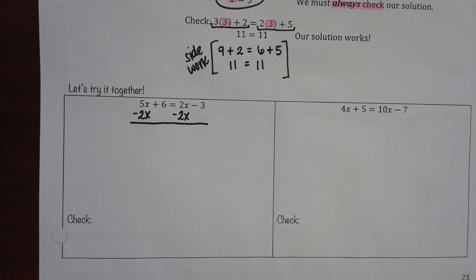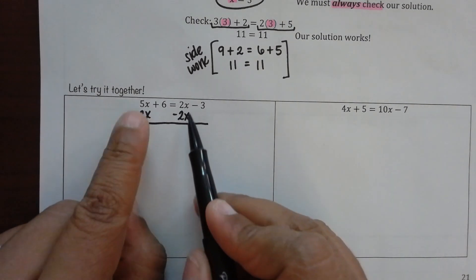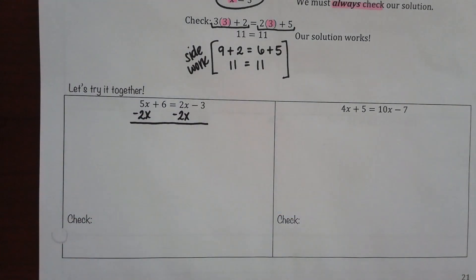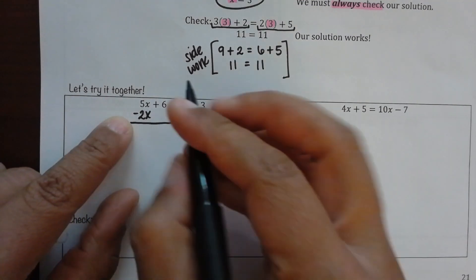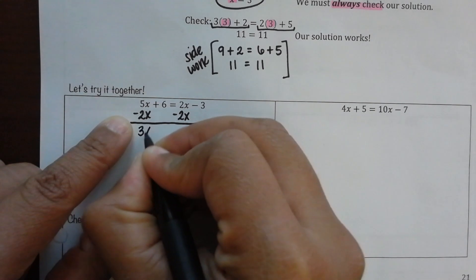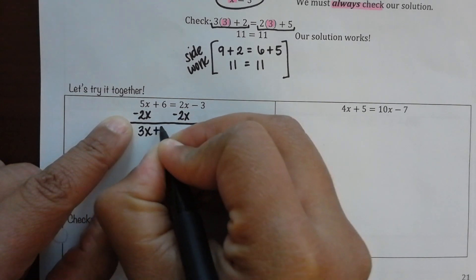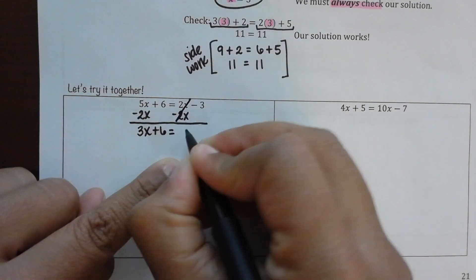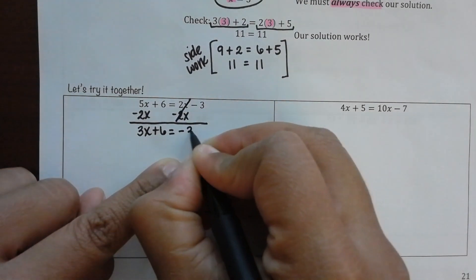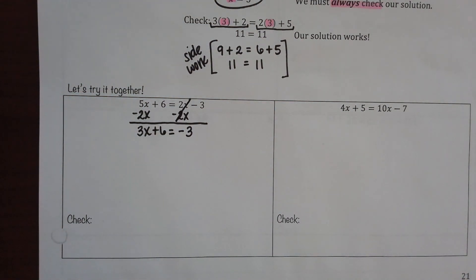Make sure you write what's being subtracted underneath it. You see how I lined up my x terms? That's how you keep your work nice, neat, clean, and concise. It's not about being perfect, it's about being legible. If you can't read it, you don't know how to study it. So, 5 minus 2 gets you 3x. Plus 6. Equals. What happens to those twos? Negative 3, right? Because there's a negative sign in the front, you bring down what's in the front of it.